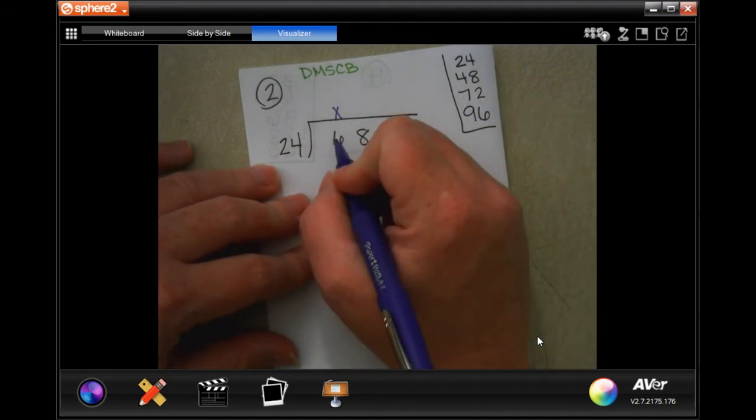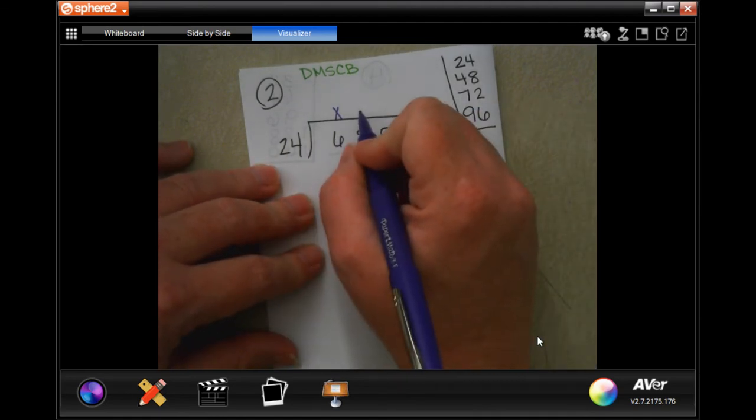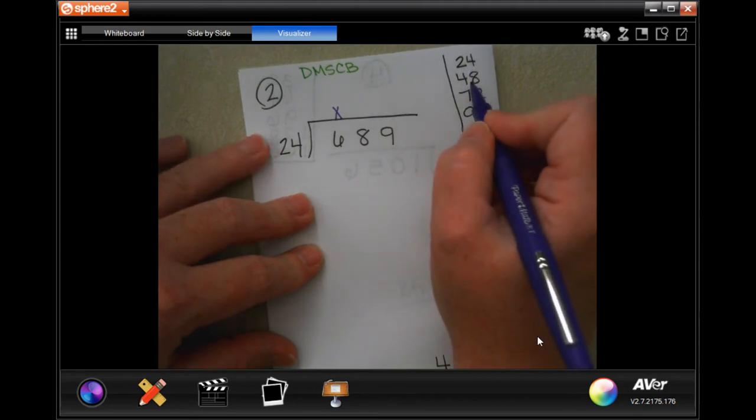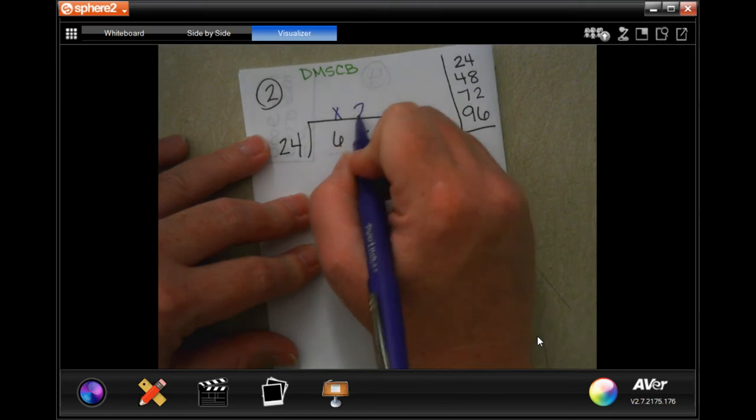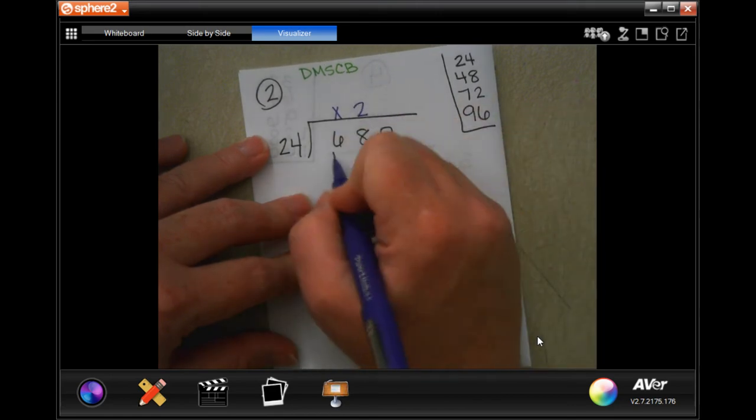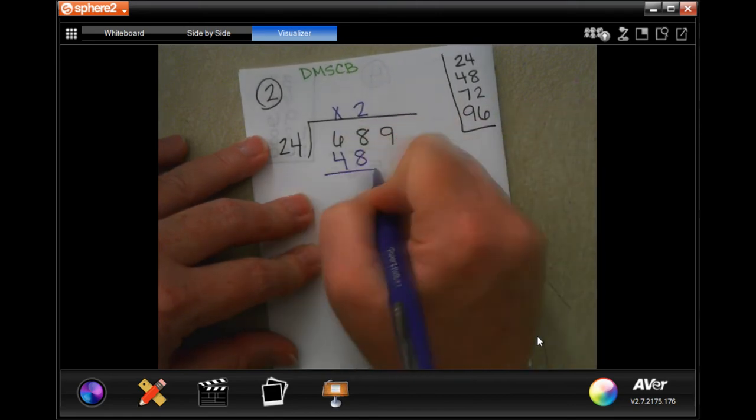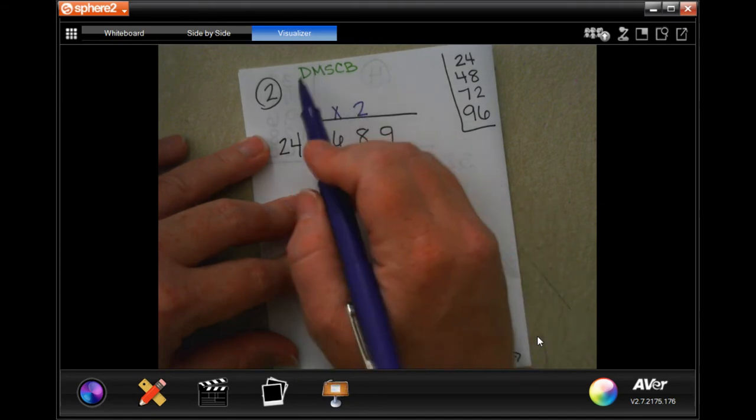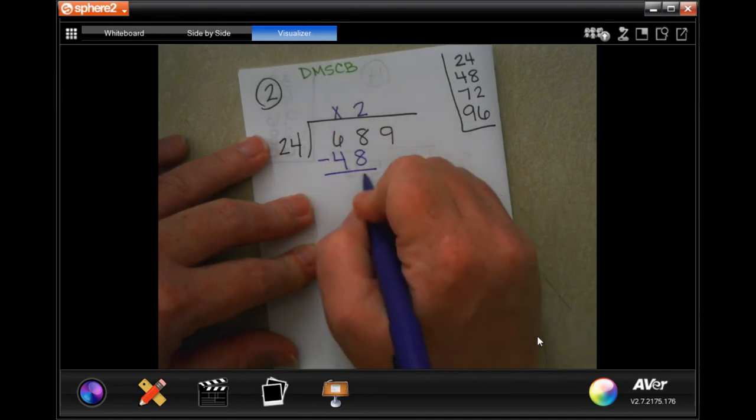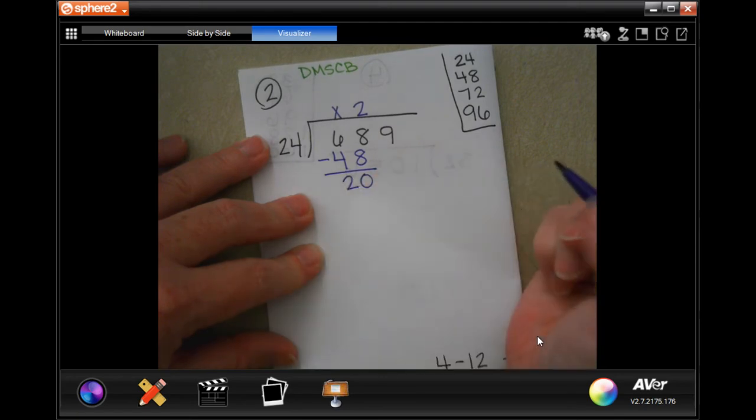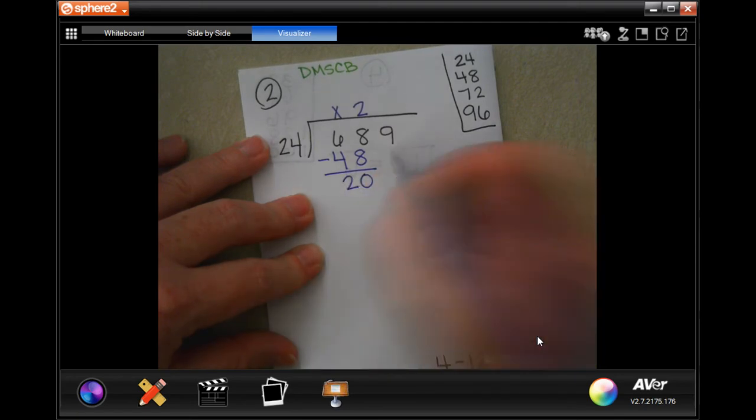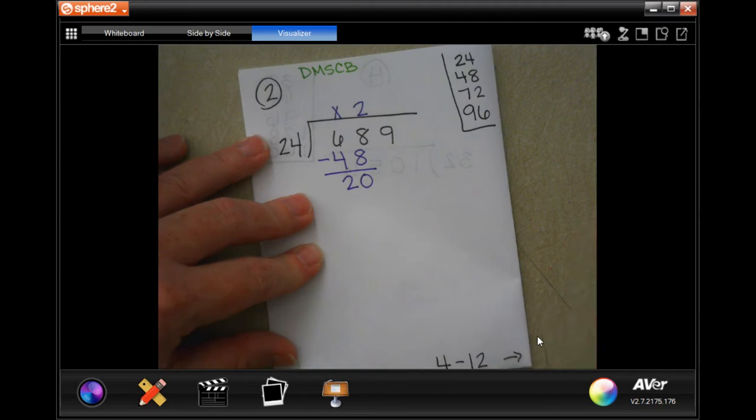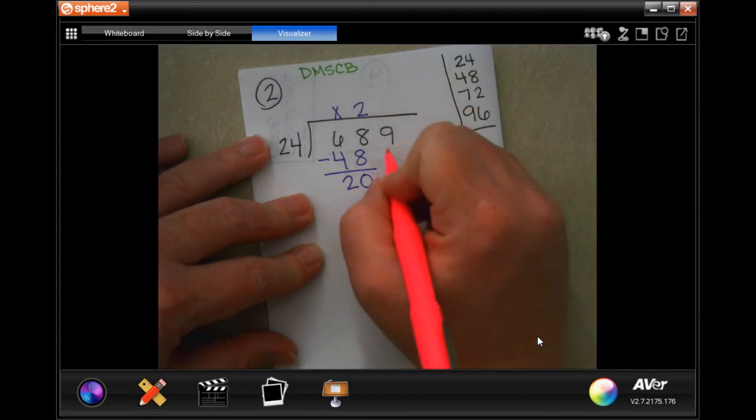So we need to decide if it's the right number, and then we need to finish the problem. So 24 is not going to go into 6, placeholder. 24 will go into 68. I'm going to come down here. It looks like 48 is going to be the closest that I can get. So 2 times 24 is 48. When I subtract, I divide and multiply. Now I'm subtracting. I get 20. It looks like I'm going to have to go further with my 24s over here. 20 is smaller than 24, so I'm going to bring down my 9.